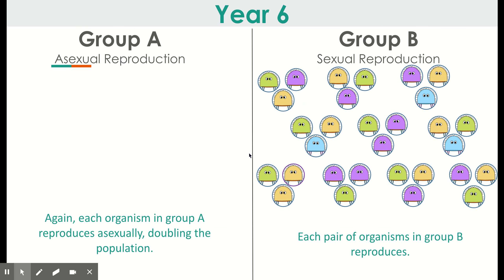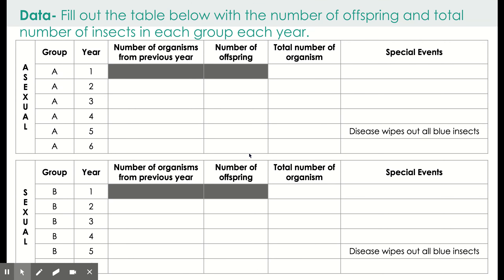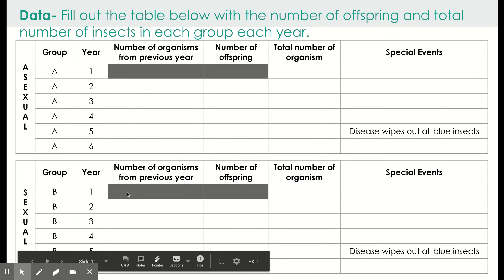Here is year six, which shows the outcome of that special event. Count how many organisms are in each group and keep track of that in slide 13. This is slide 13 where you keep the data. The table on the top has information for the asexual group A organisms, and the sexually reproducing group B organisms are recorded in the table on the bottom on the right side.